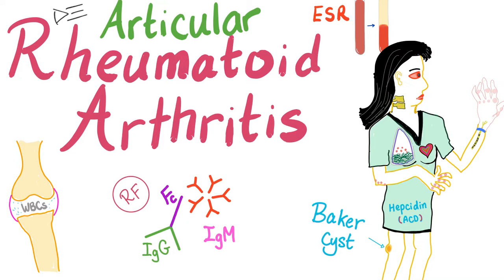Rheumatoid arthritis, as you know, increases white blood cells because it's an inflammatory arthritis. We have rheumatoid factors — they are IgM against the Fc portion of IgG antibody. ESR is usually high, CRP is usually high. The patient can suffer from scleritis, episcleritis, and atlanto-axial subluxation.